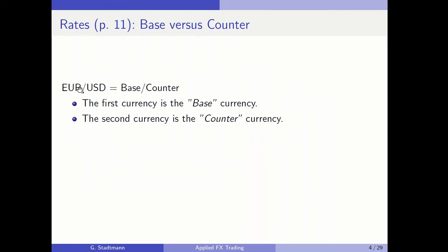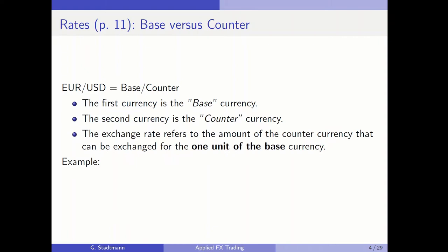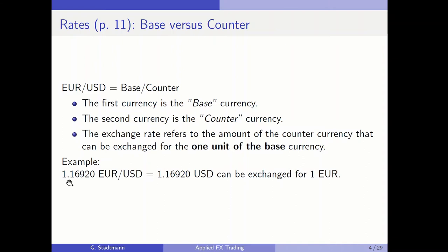The numerator of the fraction is called the base and the denominator is called the counter. So the first currency is the base currency and the second is the counter currency. The exchange rate refers to the amount of counter currency that can be exchanged for one unit of the base currency. For example, a EUR/USD rate of 1.16920 means one euro can be exchanged for one dollar and 16 US cents.